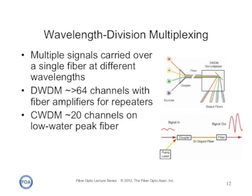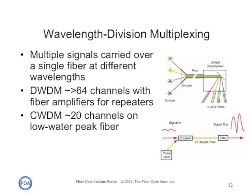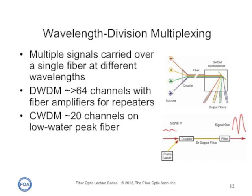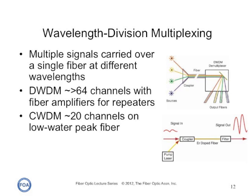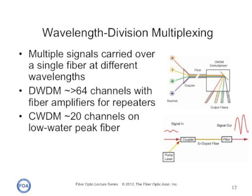Some data links may use wavelength division multiplexing to expand the information-carrying capacity of the fiber. Wavelength division multiplexing, or WDM, puts different channels of data on the fiber at different wavelengths or colors of light. Dense wavelength division multiplexing uses very closely spaced wavelengths around 1550 nanometers, while coarse wavelength division multiplexing puts a smaller number of channels at broader spacing across the range between 1300 and 1600 nanometers.